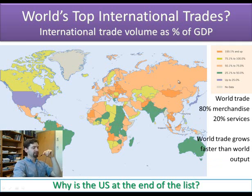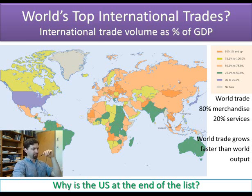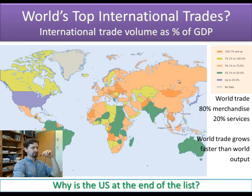World trade is roughly 80% merchandise, so most trade between countries occurs in the form of made products — clothes, shoes, electronics from China, and so on. The main merchandise the United States sells to other countries includes industrial equipment and airplanes — heavier, more high-tech stuff that is very capital intensive to make and requires lots of machinery.